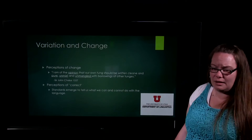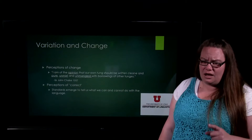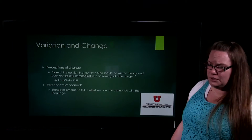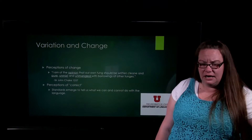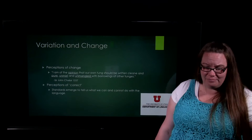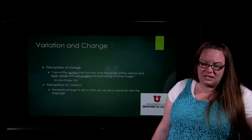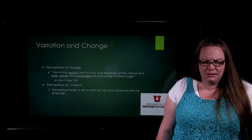Here's a quote from Sir John Cheke in 1557: 'I am of the opinion that our own tongue should be written clean and pure, unmixed and unmangled with borrowings of other tongues.' Basically he's saying English should be pure, without impurities from other languages. What's interesting is that the underlined words in his quote are actually from French — borrowed into English. So while he's saying English should remain pure, the words he's using are not even English but borrowings from other languages.